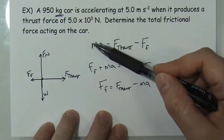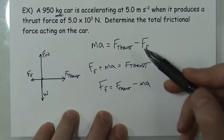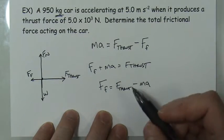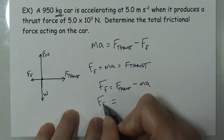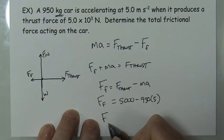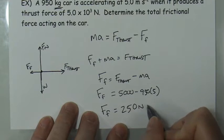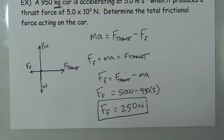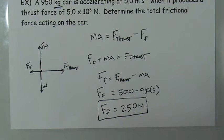You can also plug in numbers first and do the algebra afterward — either approach is fine. Plugging in: 5000 minus 950 times 5 gives a frictional force of 250 Newtons. This is a very typical problem where some forces are known and some are unknown. This is exactly the kind of analysis engineers perform when designing buildings or vehicles — determining the forces acting on an object and how balanced or unbalanced they will be.